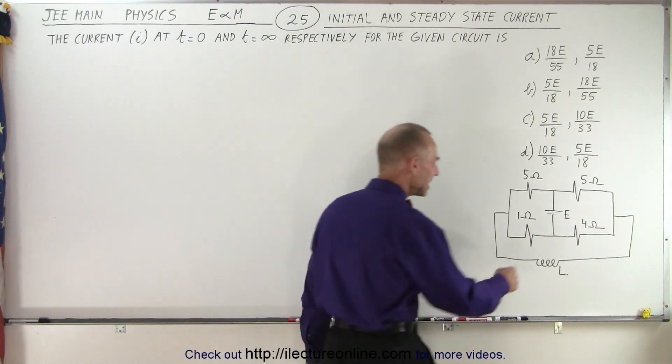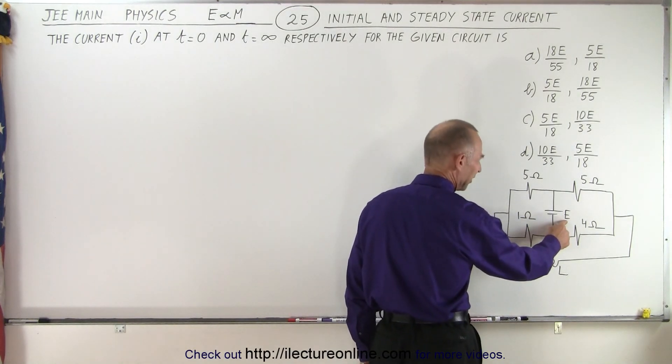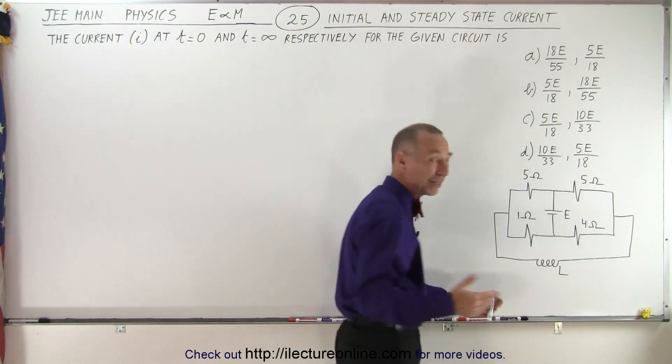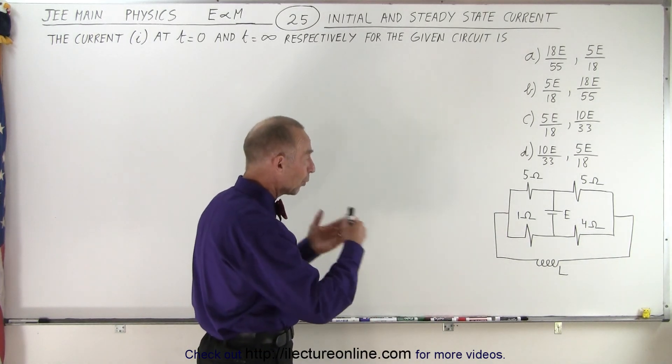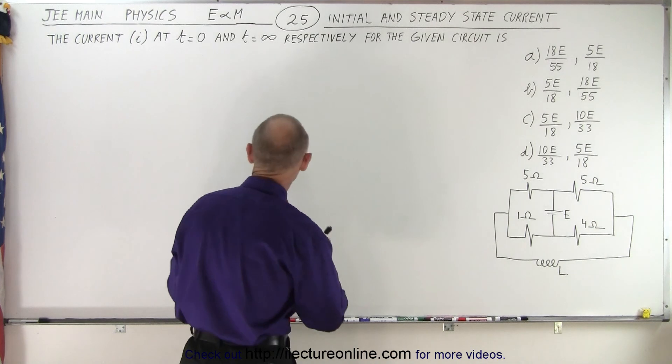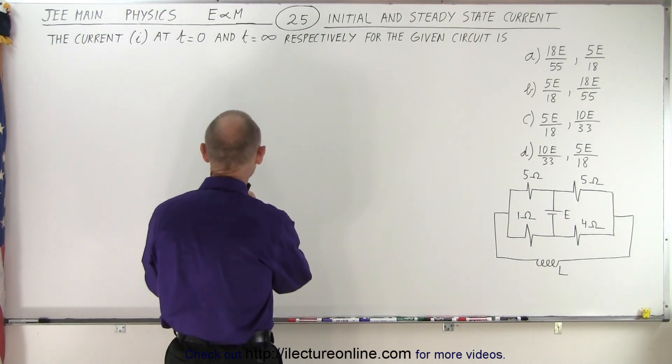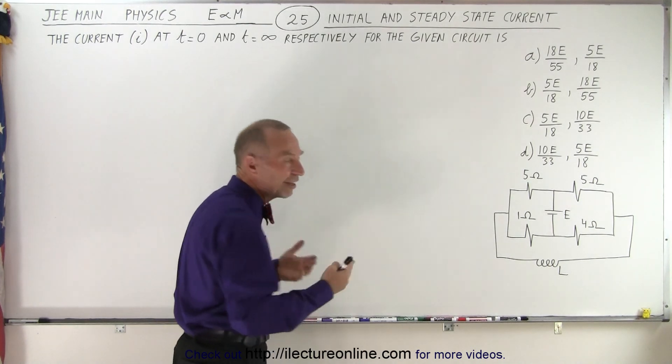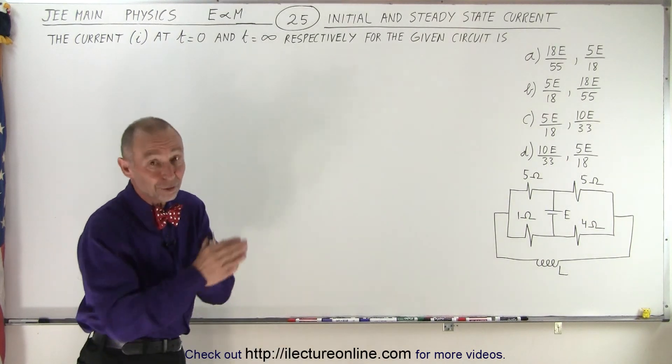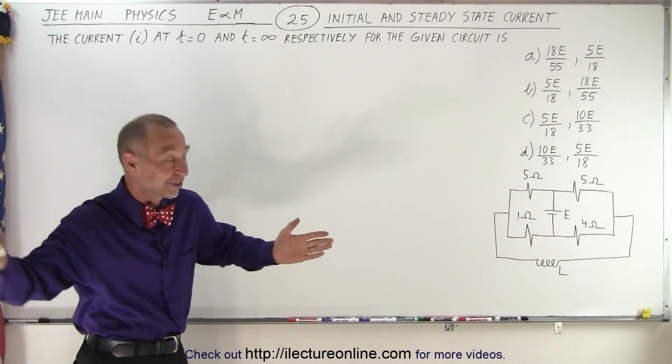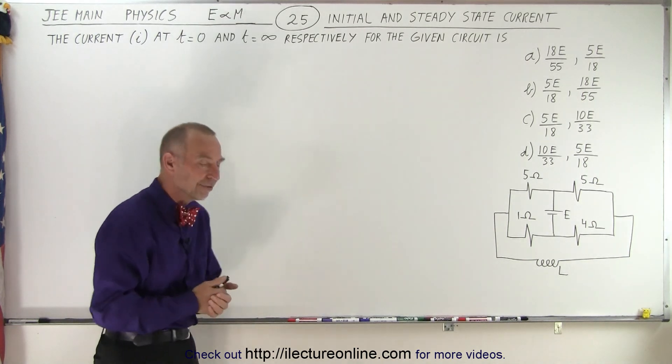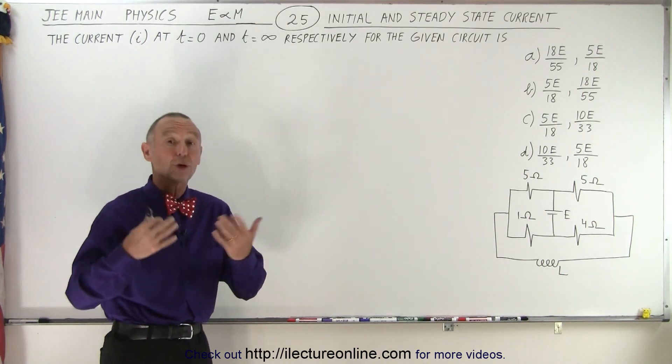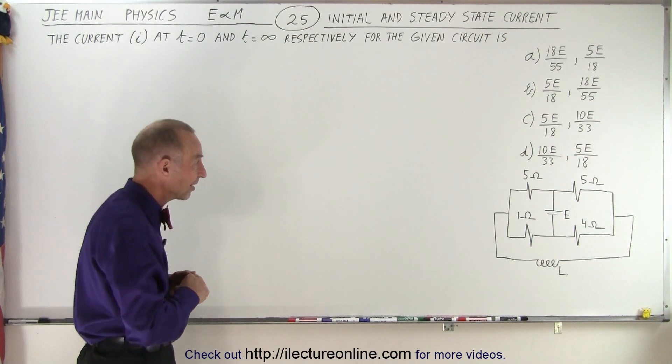Now notice they use the letter E for the battery, I prefer V for volt, but they put E for EMF. And notice it has four resistors, it has one inductor, and then they talk about current at time equals zero and current at time equals infinity. Infinity means when we've reached steady state, doesn't mean that an infinite amount of time has gone by, just enough time for the circuit to reach its steady state value, or at least the current of the circuit to reach its steady state value.